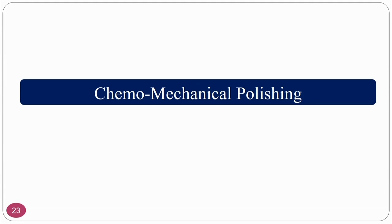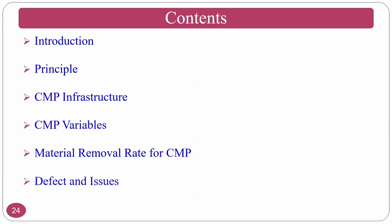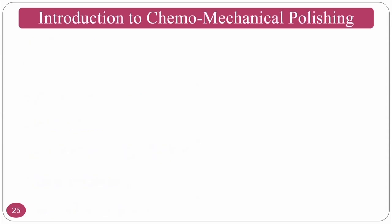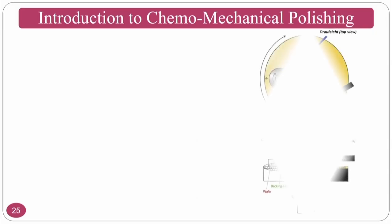We now move to chemo mechanical polishing (CMP), a hybrid version of pad polishing. In conventional pad polishing, oils or water with abrasive particles are used, but in CMP, passivating chemicals are also added along with the abrasive particles. The contents of CMP include its introduction, principle, infrastructure, variables, material removal rate, mathematical relations, defects, and applications — primarily in the electronic industry.